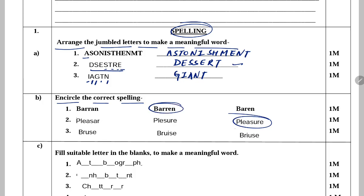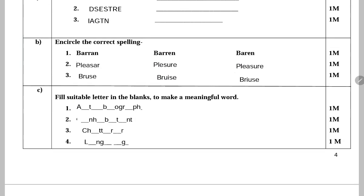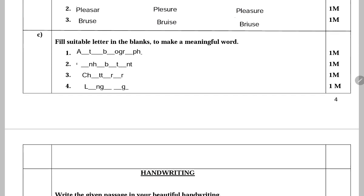Next: Fill in the suitable letter in the blanks to make a meaningful word. This is 'autobiography' — bio, graphy. Next blank: N-H blank B-T-N-T — 'inhabitant'. Next: C-H blank T-T blank R-E-R — 'chatterer'.